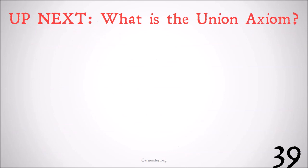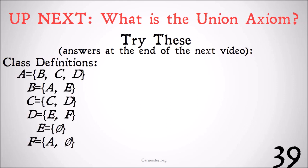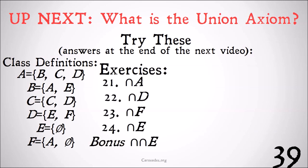Up next, we're going to be adding a new axiom to our basic universe — the union axiom — now that we've learned about unions and intersections. But before we get to that, go ahead and give these exercises a try. For some class definitions A through F — the same class definitions we've been using throughout — try to find the intersection of A, the intersection of D, the intersection of F, the intersection of E, and the intersection of the intersection of E. Make sure to subscribe and hit the notification bell so you know when the next video comes out.